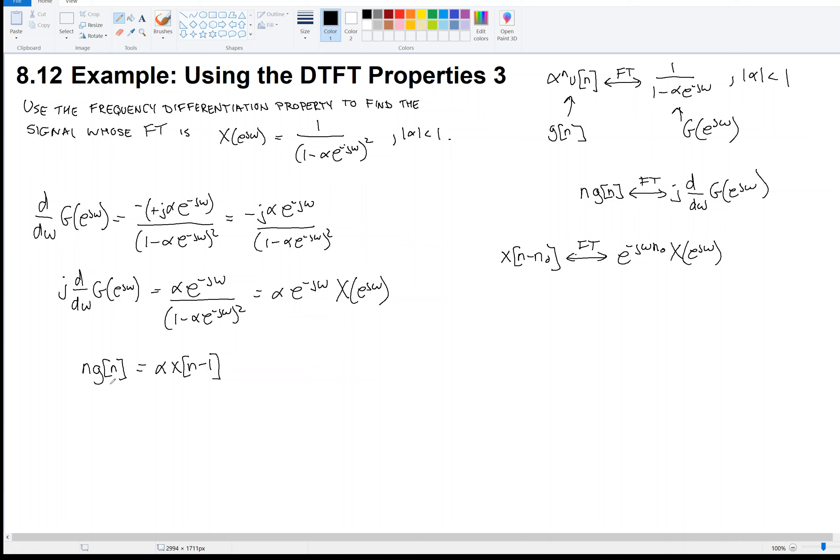Now, what is g[n]? This is n·α^n·u[n] equals α·x[n-1]. We're not after x[n-1]. We're after x[n], right? The signal whose Fourier transform is this thing.